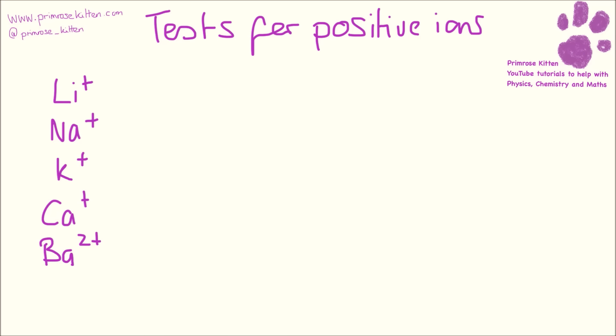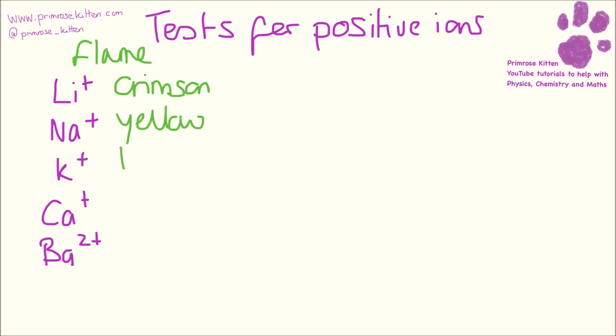The exam board is going to expect that you know the test for ions, and it's not just going to be something as simple as what colour does this go in a flame test — they're probably going to want you to play detective. Now some of these colours might seem a bit unusual, but these are the colours that the exam board would like you to call them. So lithium goes crimson, sodium yellow, potassium is a lovely lilac colour, calcium goes red — notice different from the crimson — and barium goes green, even though it's basically impossible to see in the lab.